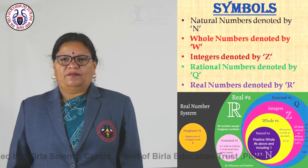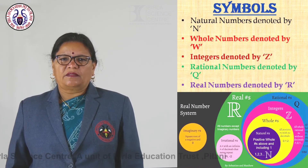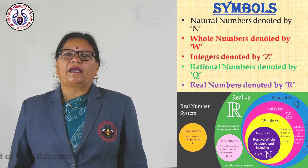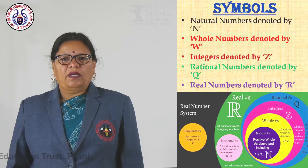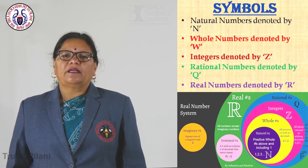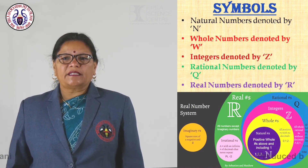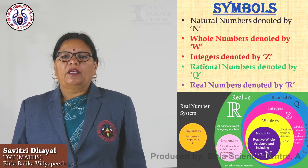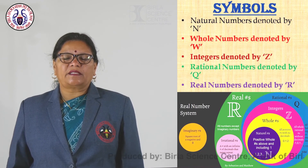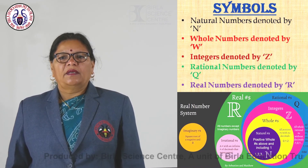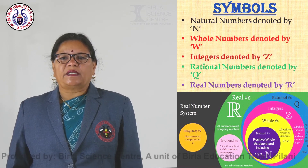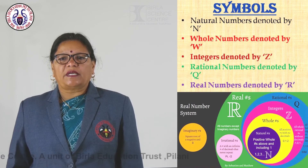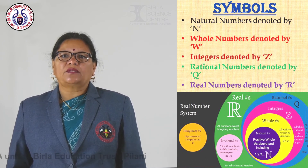We have some special symbols for types of numbers to remember them. Natural numbers are denoted by N. Whole numbers are denoted by W. Integers are denoted by Z. Rational numbers are denoted by Q. And real numbers are denoted by R. Real numbers can be represented on a number line, and in class 9 and 10, we are going to study about real numbers only.